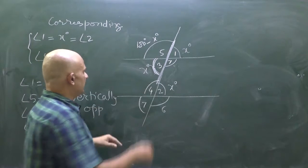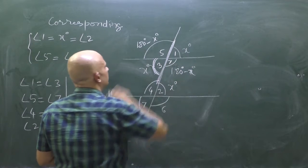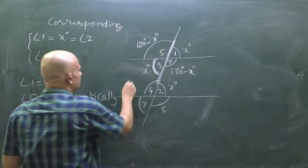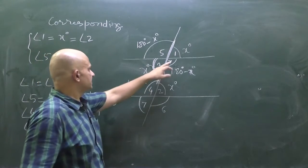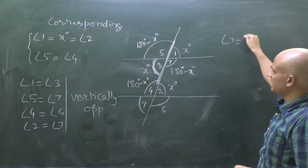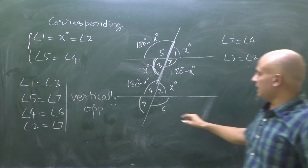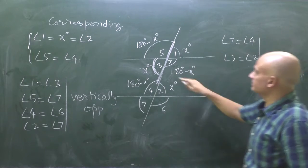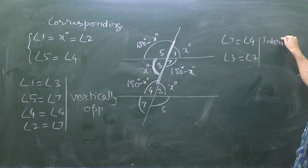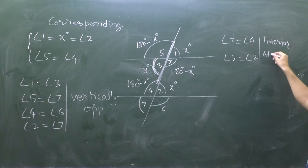Angle 3 equals angle 2 in value. If angle 1 is x degrees, then angle 3 is 180 minus x degrees from the linear pair concept. Angles that are vertically opposite share equal values. Angle 7 equals angle 4, and angle 3 equals angle 2.